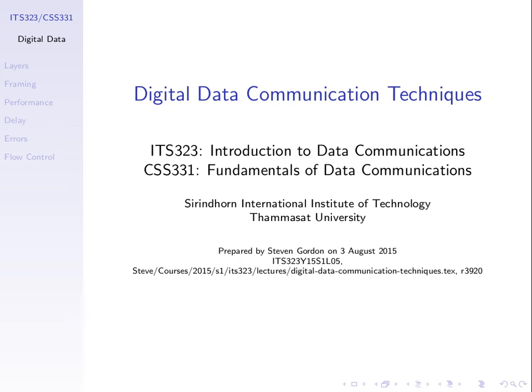We've almost covered the main techniques to get data across a link — at least data as signals. In the data transmission topic, we spoke about the characteristics of signals. Transmission media covered the things between the transmitter and receiver — wired and wireless media. In the previous topic on signal encoding techniques, we spoke in more detail about how to convert data into signals.